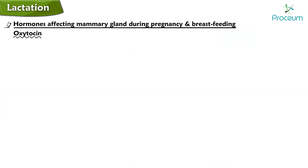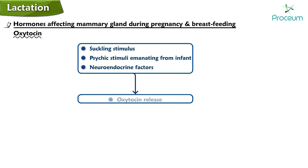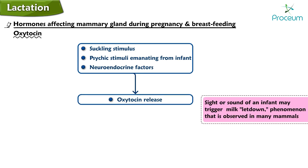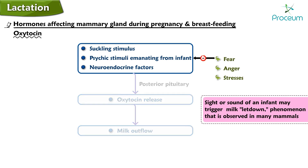In addition to the suckling stimulus, a vast array of psychic stimuli from the infant as well as neuroendocrine factors also promote oxytocin release. The sight or sound of an infant may trigger milk letdown — a phenomenon observed in many mammals. Thus the posterior pituitary releases oxytocin episodically even in anticipation of suckling. This psychogenic reflex is suppressed when fear, anger, or other stresses are encountered, thereby inhibiting oxytocin release and suppressing milk outflow.